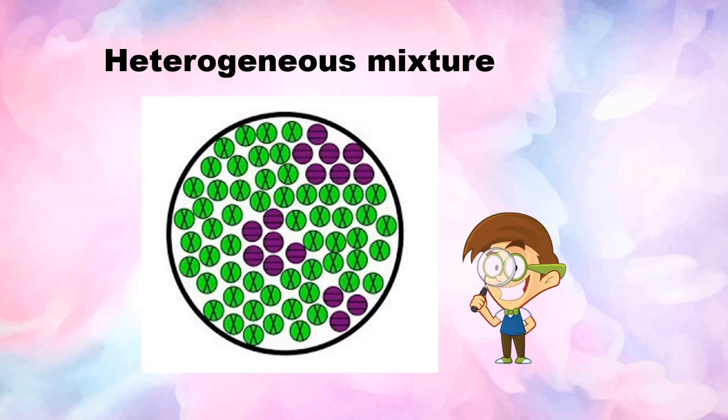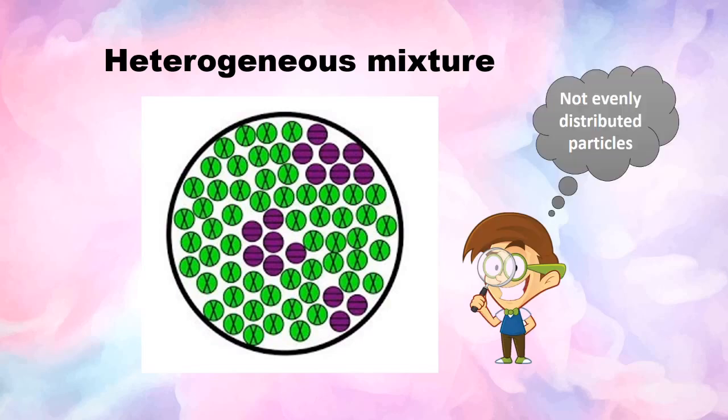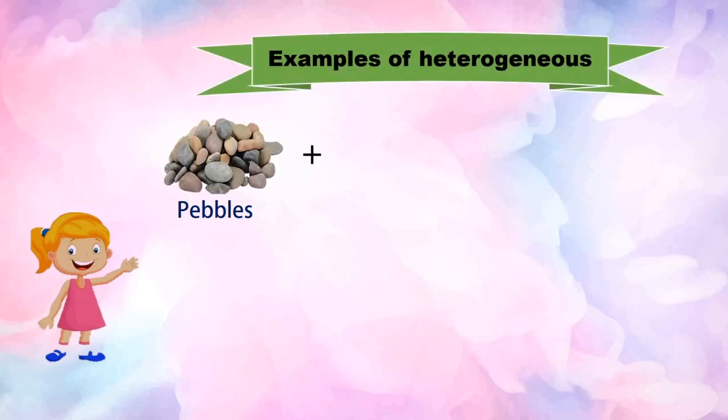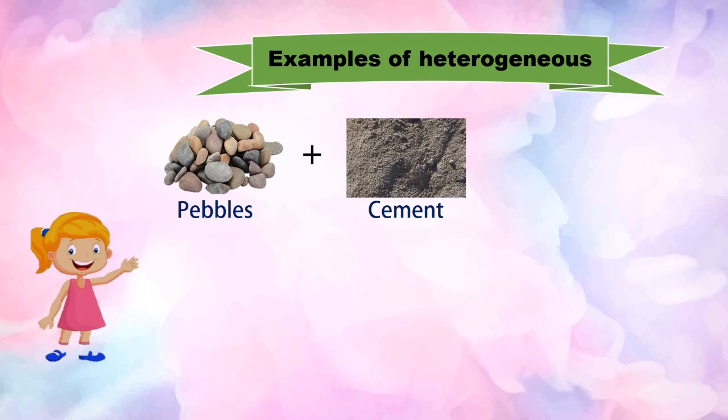Looking closely at the particles of a heterogeneous mixture, the particles are not evenly distributed. The components, represented by violet circles, are concentrated in certain areas. Here are examples of heterogeneous mixtures: pebbles and cement are solids which are the components of conglomerate rock. In this mixture, we can still distinguish pebbles from cement.